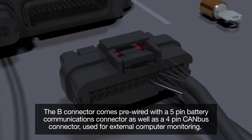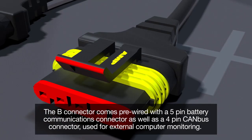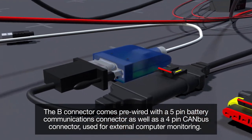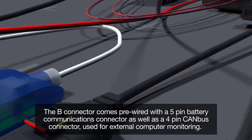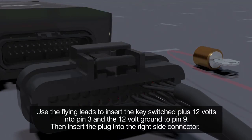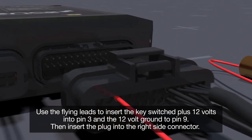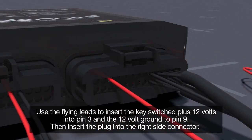The B connector comes pre-wired with a five pin battery communications connector as well as a four pin canvas connector used for external computer monitoring. Use the flying leads to insert the key switched plus 12 volts into pin 3 and the 12 volt ground to pin 9. Then insert the plug into the right side connector.